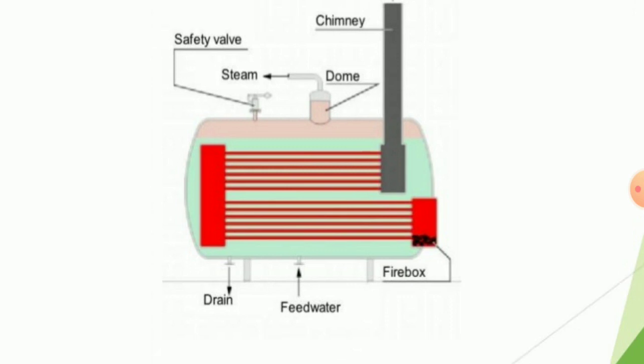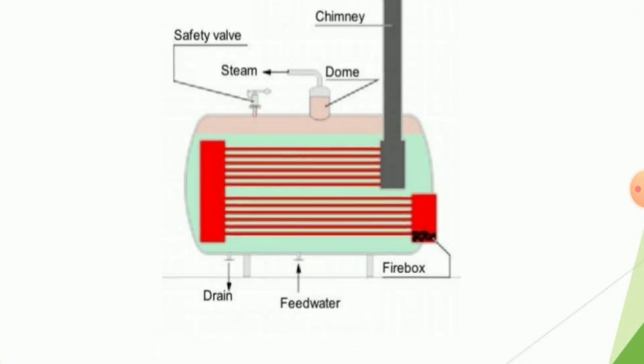There is also a drain and feed water arrangement at the bottom of the boiler. As you can see in the figure, there is a drain so we can drain water or other particles from the body of the boiler, and a feed water inlet is also provided at the bottom. On the right side of the figure, you can see the firebox which provides continuous combustion for the heating of the tubes.